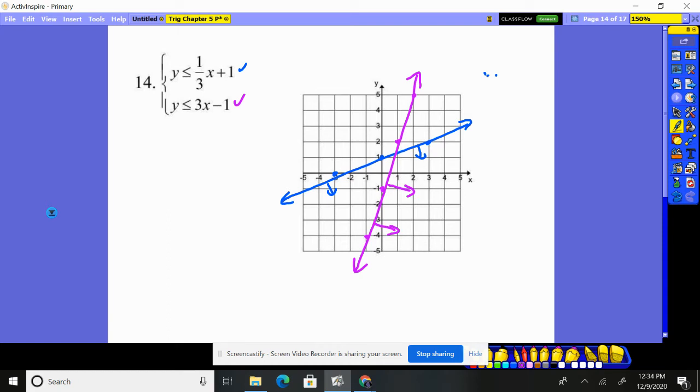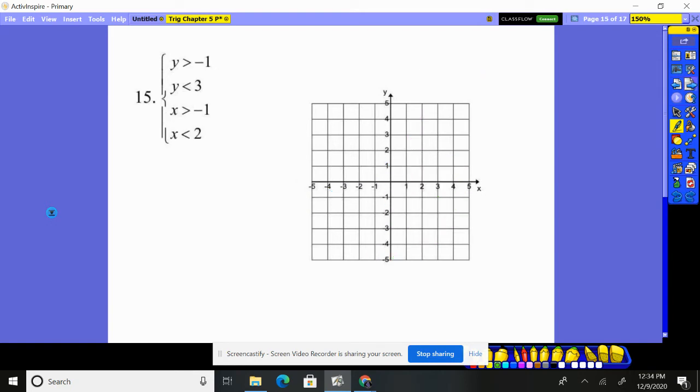So if I'm shading there and there, it looks like to me these are the points that make them both true. So that's the part I'm going to shade.